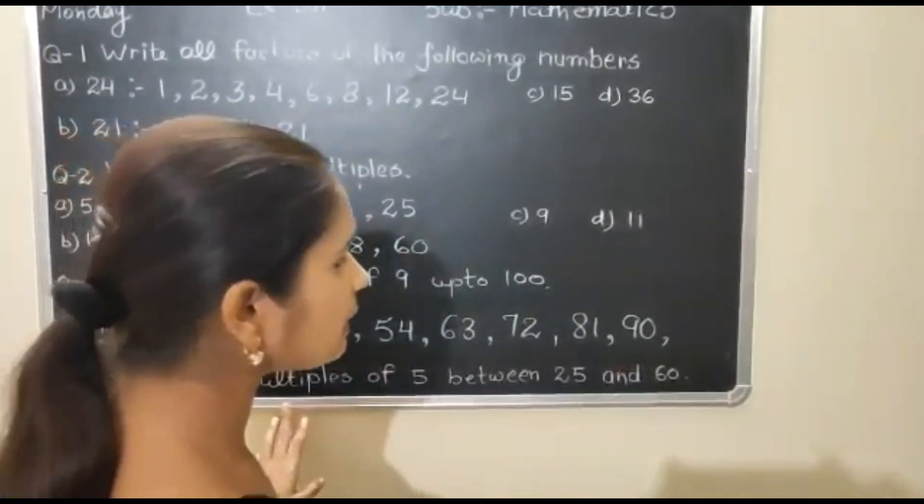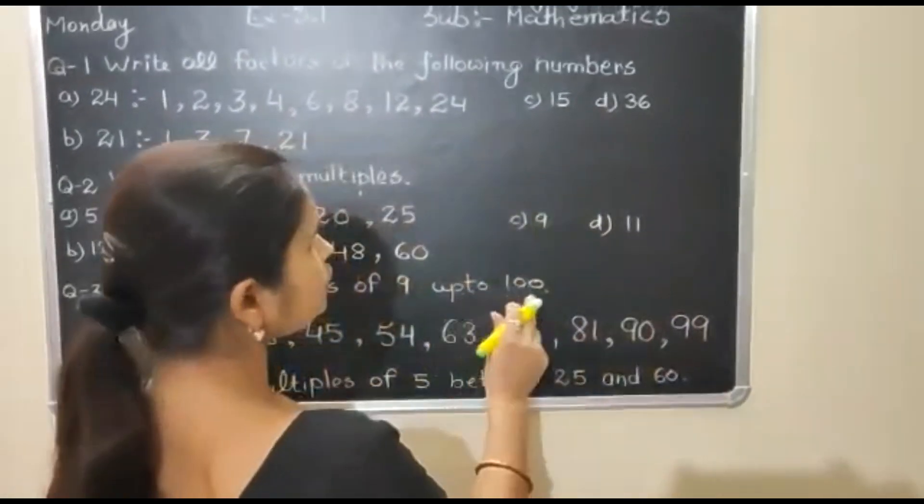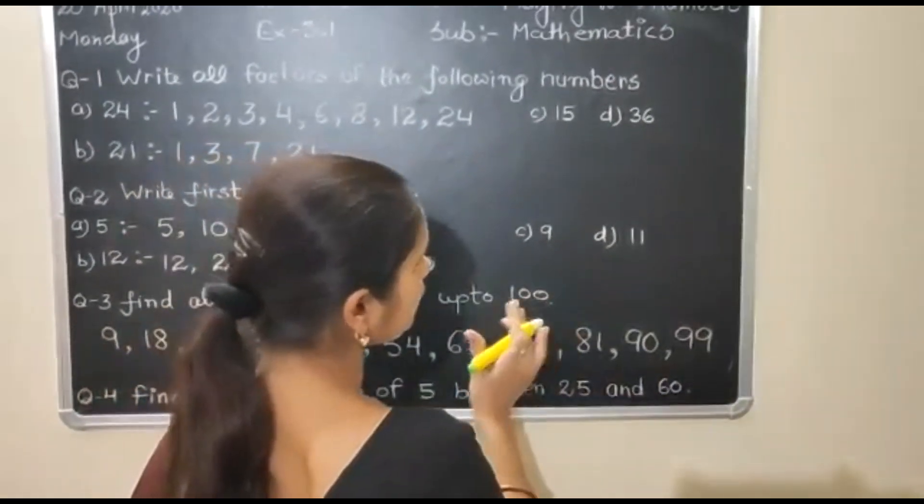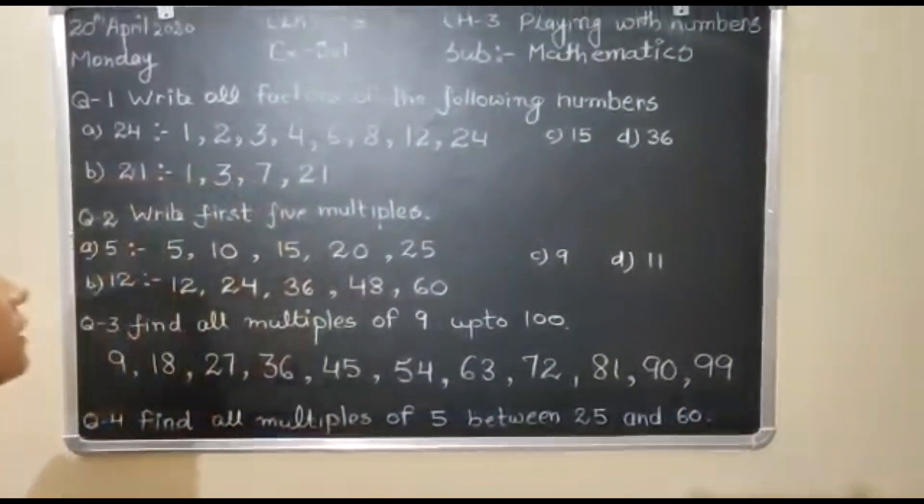What will be the next multiple of 9? That will be 99. Up to 100. It means you have to go up to 100.